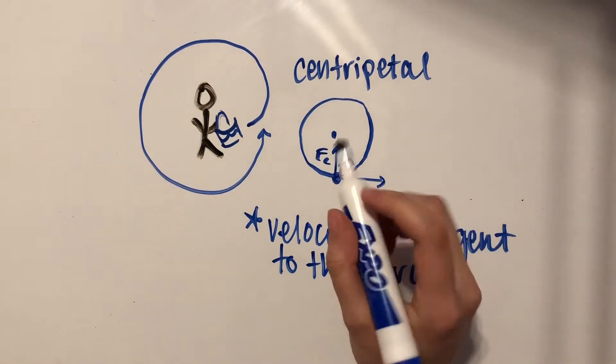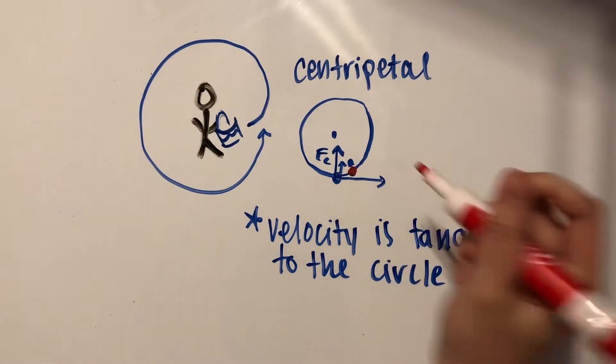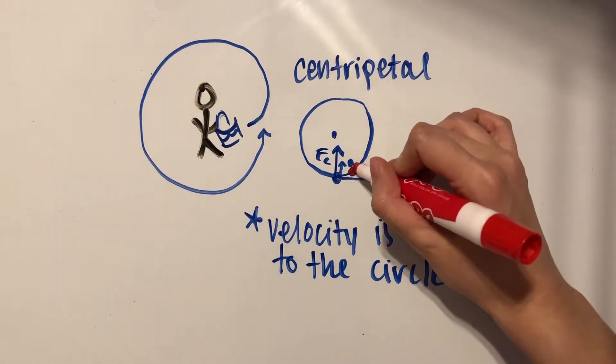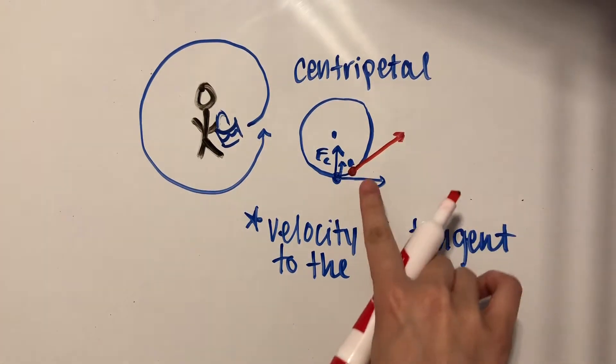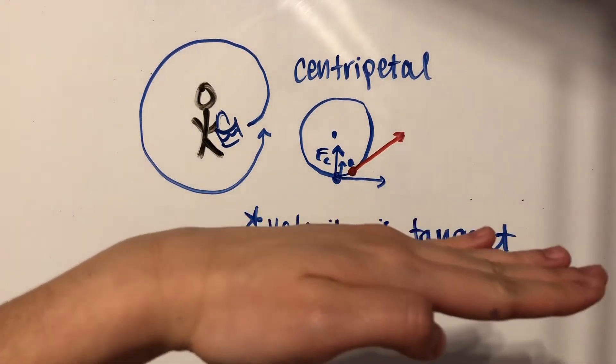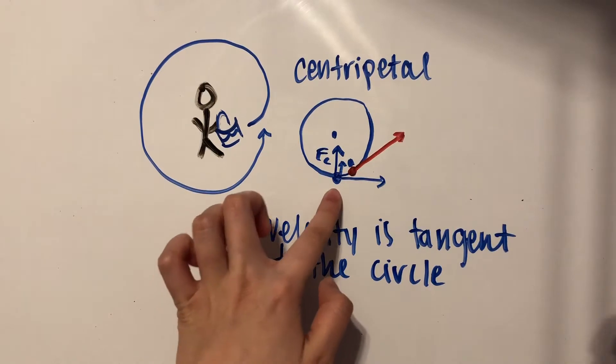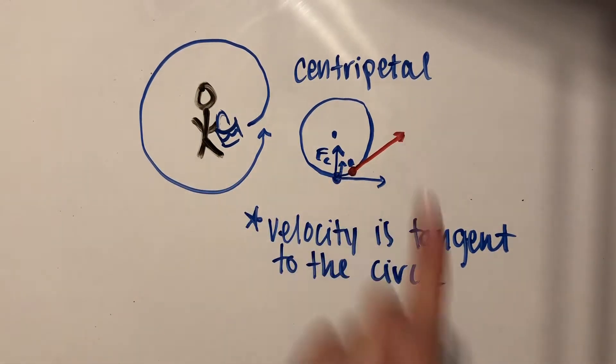At this new point, which is the next moment in time, its velocity is now going to be tangent to the circle, and it's slightly higher, angled higher upwards than it was before, because the acceleration was pulling it upwards.